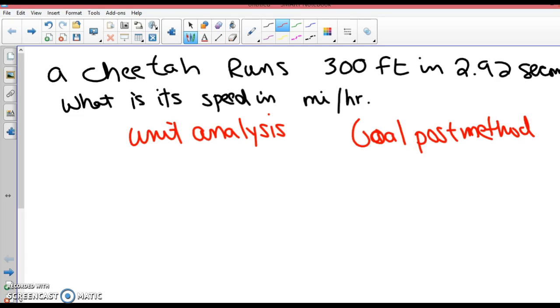We are converting. When it is one conversion, it is easy. We are starting with 300 feet in 2.92 seconds. Please write it just like that. Write it on the left hand side of your paper. That is what we are starting with. Feet per second.